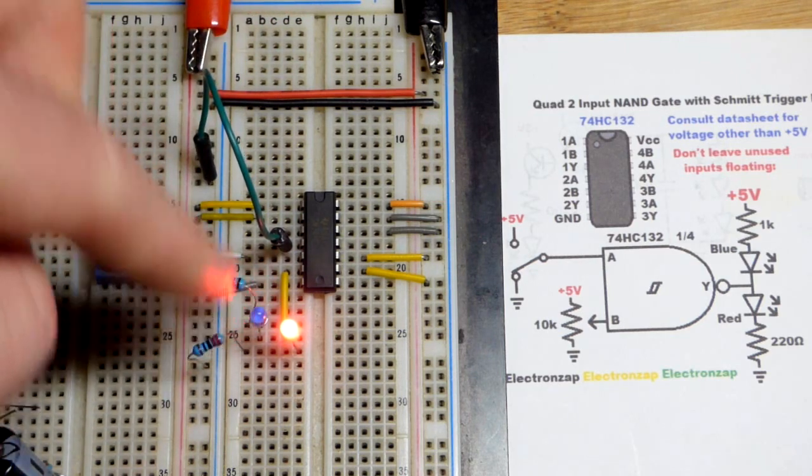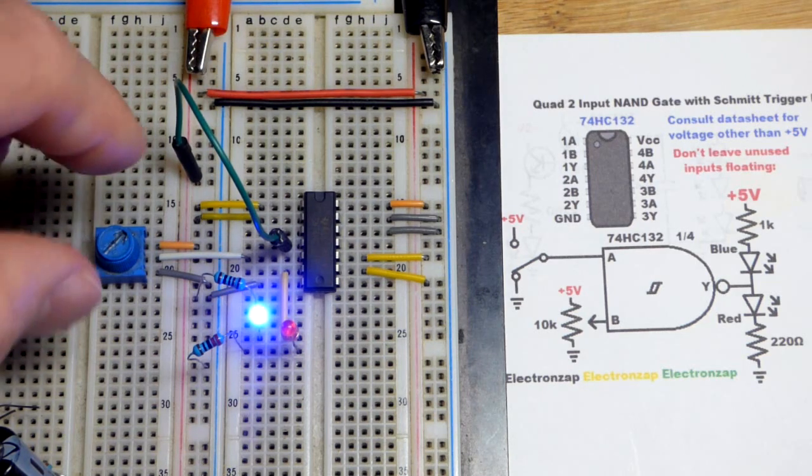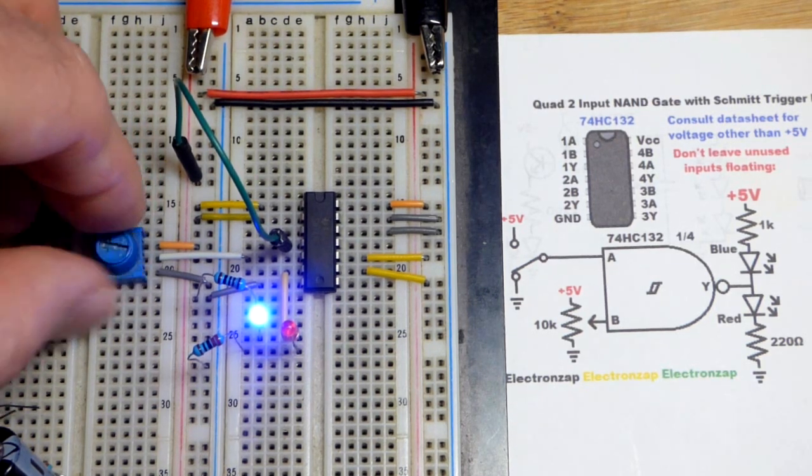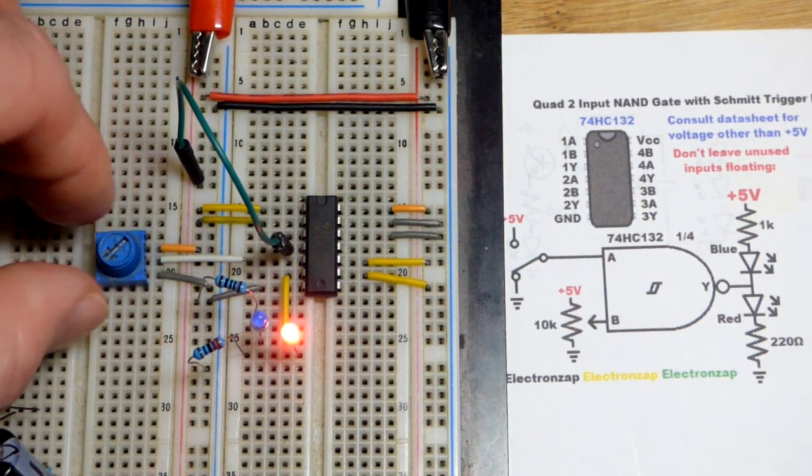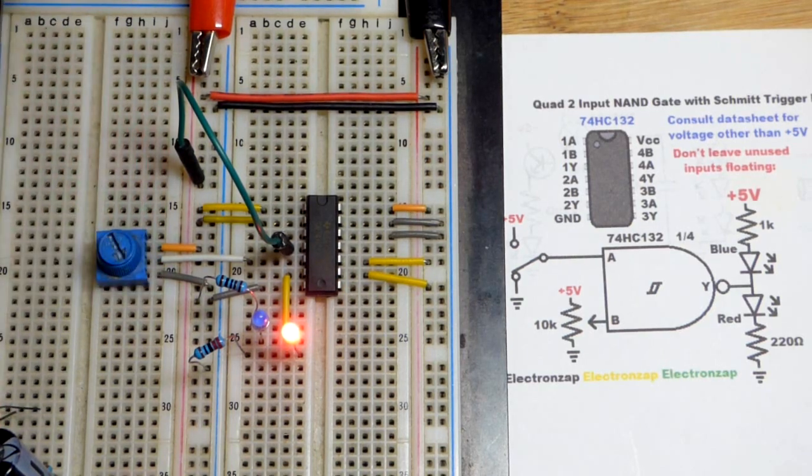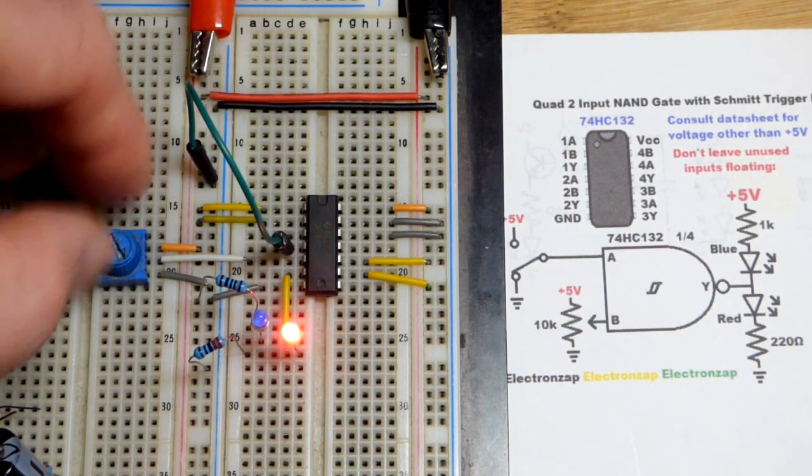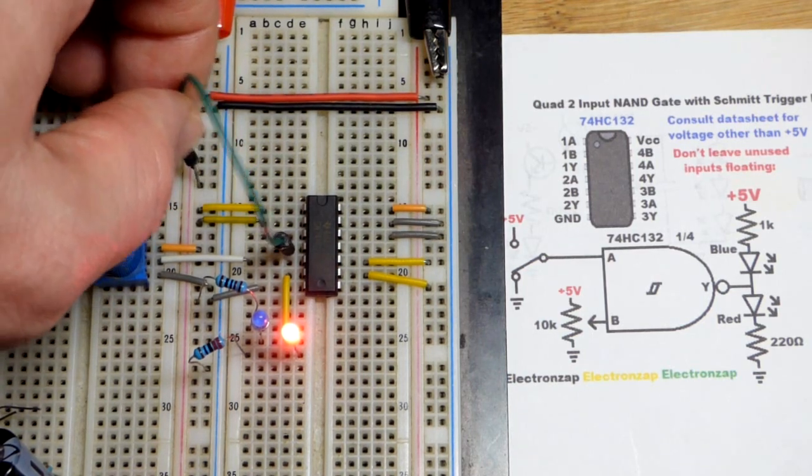There we go. We got one low. Now the output is high. We got this one high. Here is where the Schmidt trigger effect kicks in. So I'm going to lower this trim pot. You're going to see that we jump from low to high right there. And so yeah, now it's going to be high unless both are high. It's only low if they're both high right there.